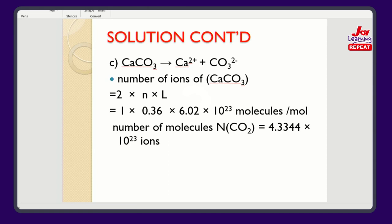Now let's look at the ion situation. If they tell you to find the number of ions — when calcium carbonate is put in water and dissociates, you get calcium as an ion and carbonate as an ion. So how many ions are there? Two different types of ions, and every ion will have its mole in the water. Because of that, it's going to be two times whatever the formula gives. And we are good to go.